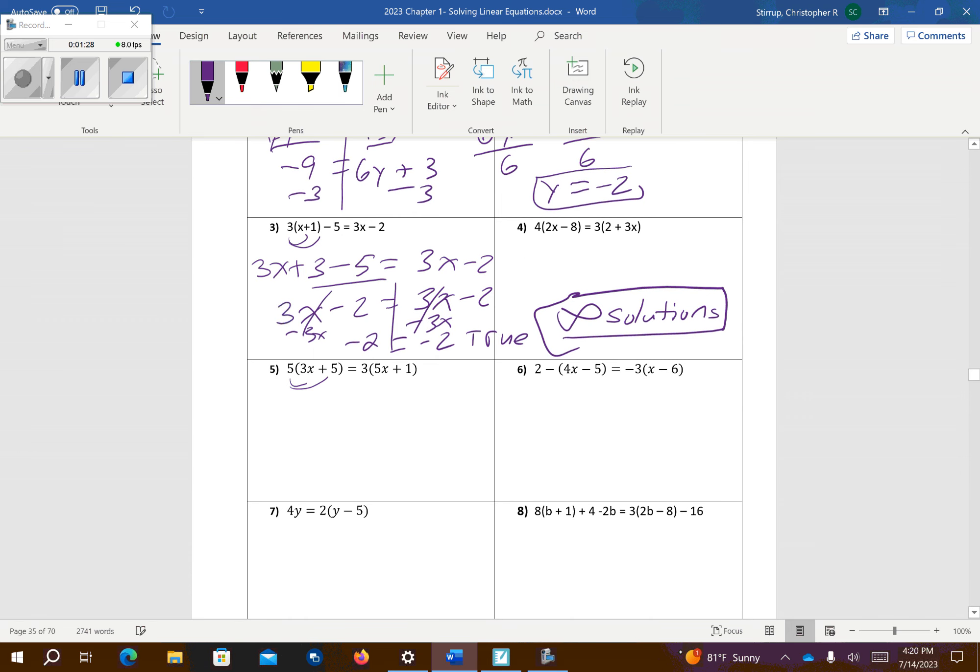Number 5, I'm going to distribute the 5 to each of these, so I get it here. And then that's going to give me the same on this side, so I get 15x plus 3. Then we're going to go ahead and subtract 15x from both sides. Those cancel, and those cancel, so you get 25 is equal to 3. Well, 25 is not equal to 3. That's false, so that means you have no solution.